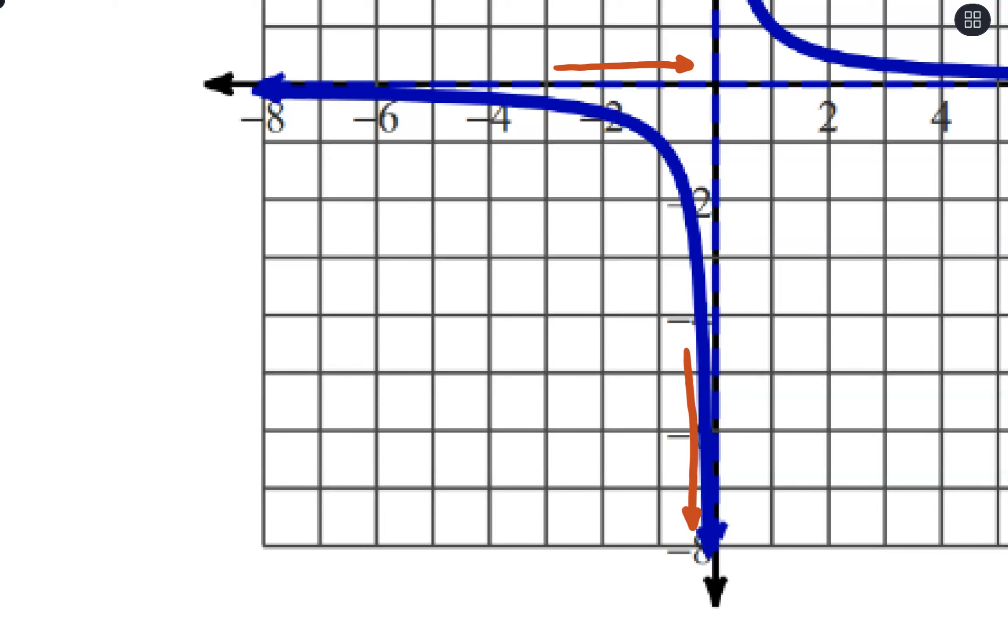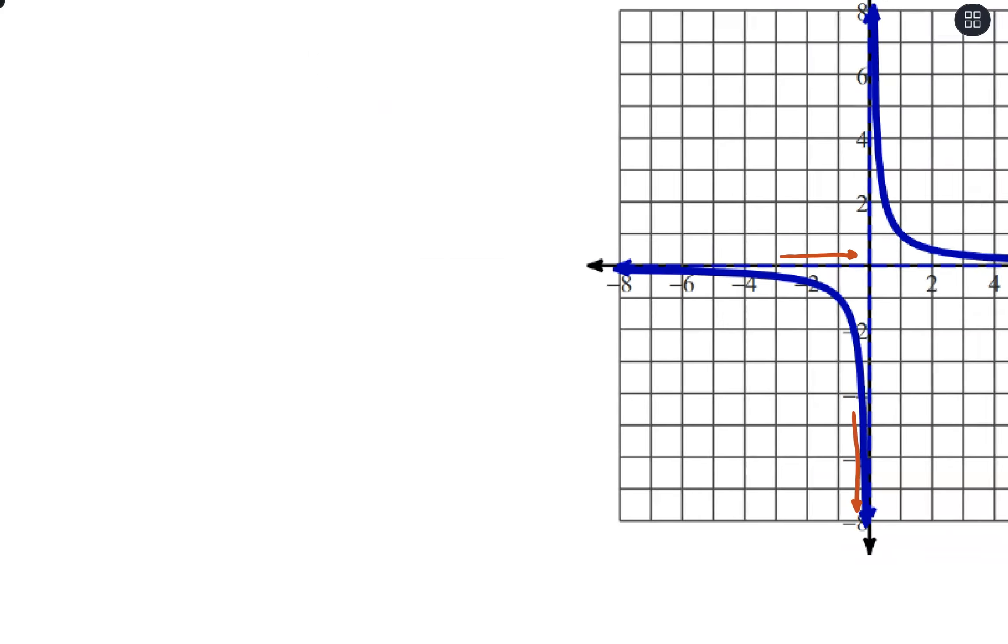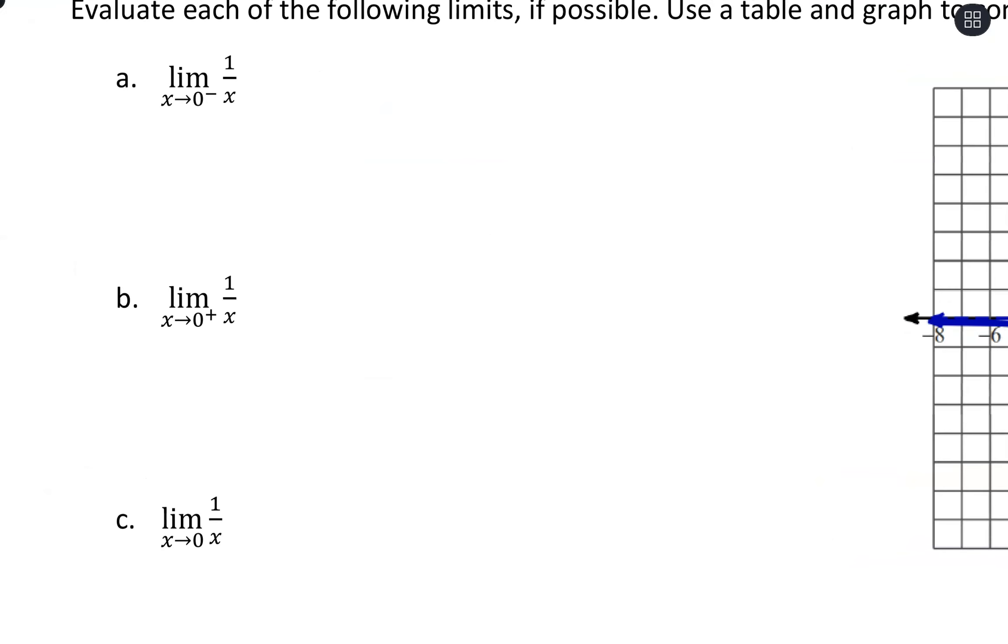They'll get infinitely small. We're just getting the smallest possible values. Because we're going off in the downward direction, we would say the limit as x approaches 0 from the left is going to be negative infinity. Because we're going in that downward direction, that would be approaching the negative side, and it's infinitely small.